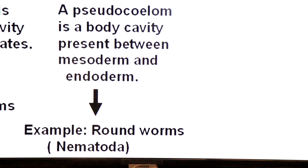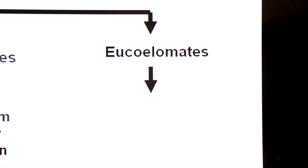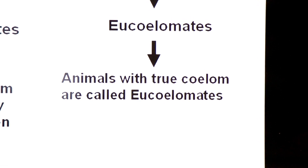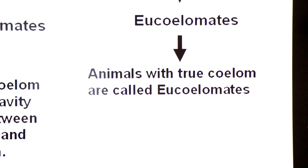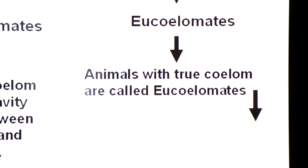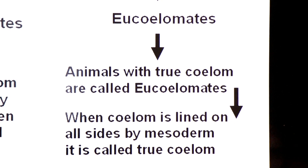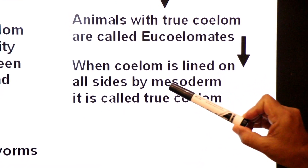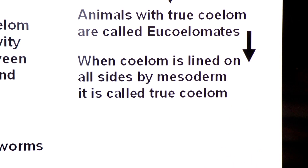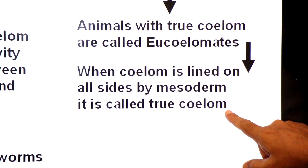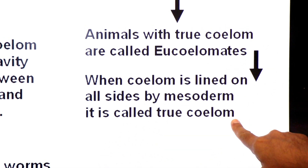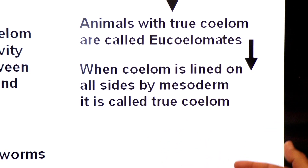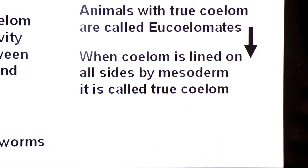Dear students, next we have Eucoelomates. Animals with true coelom are called Eucoelomates. They have a true coelom. What is true coelom? When the coelom is lined on all sides by mesoderm, it is called true coelom. In pseudocoelom, the coelom is not completely surrounded by mesoderm — it is present between mesoderm and endoderm.